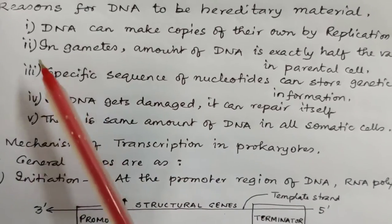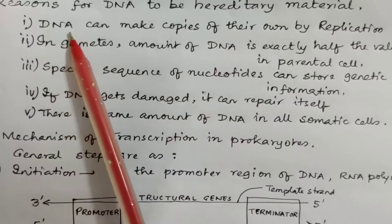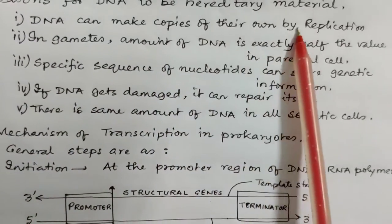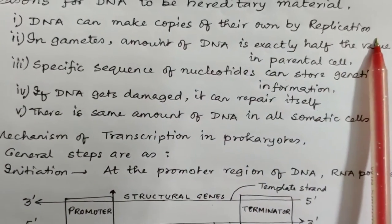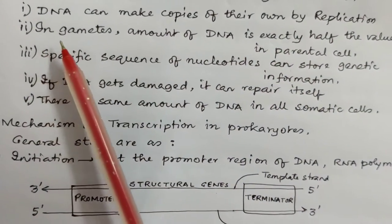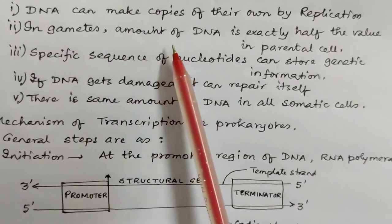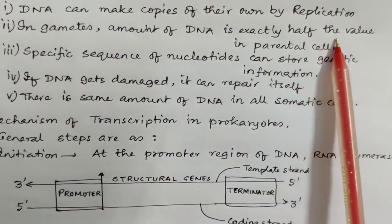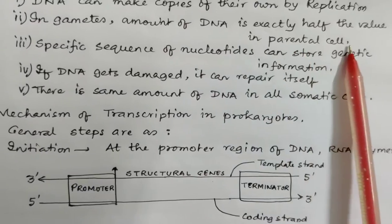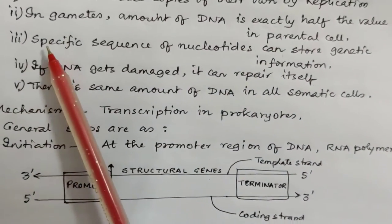There are five reasons given here. Number one is DNA can make copies of their own by the replication process. Second is in the gametes the amount of DNA is exactly half the value in the parental cell.